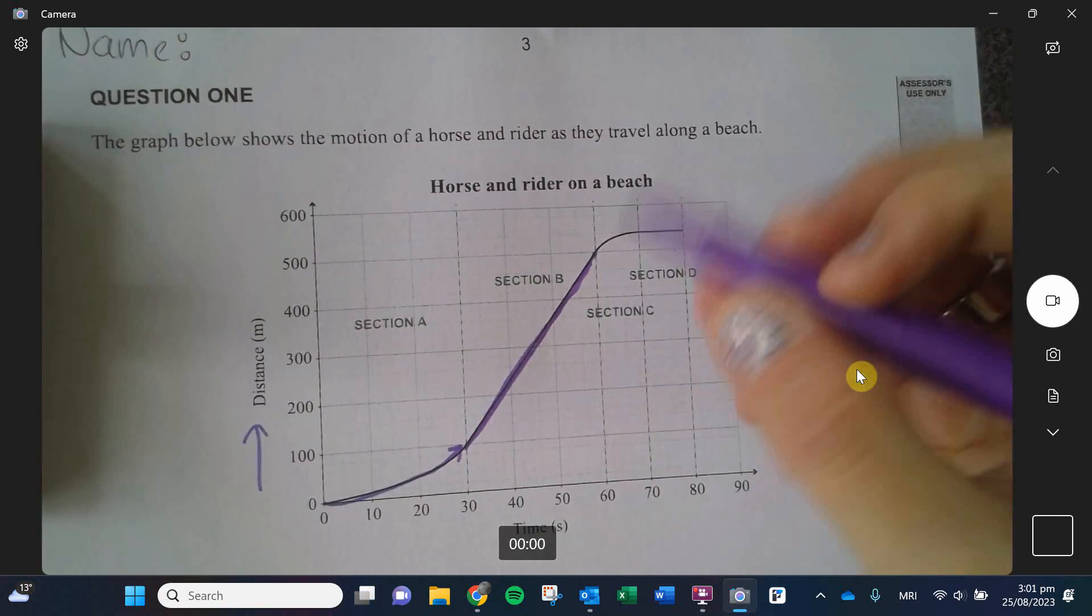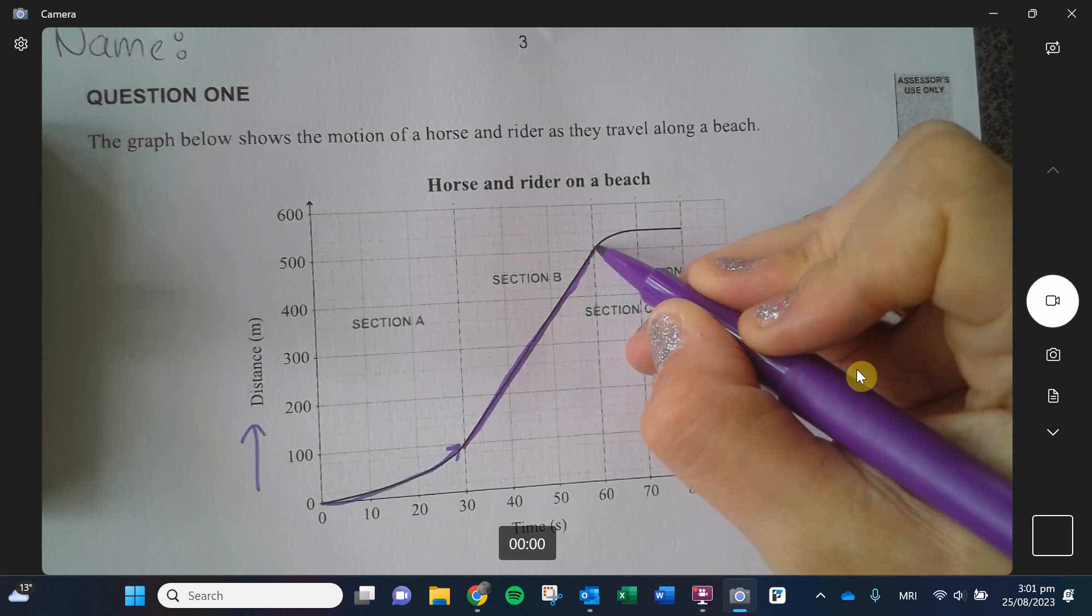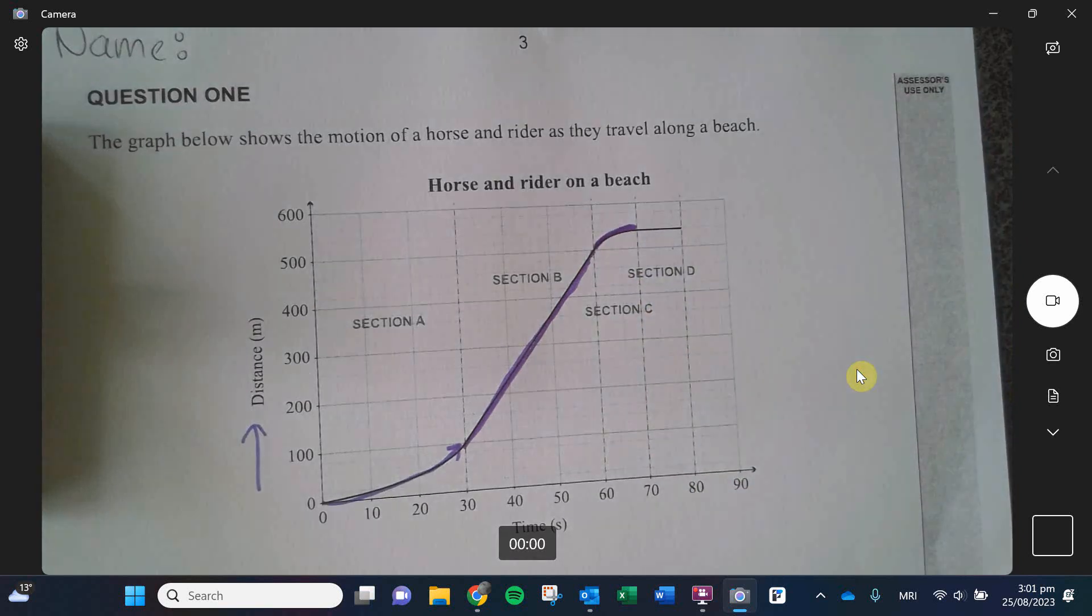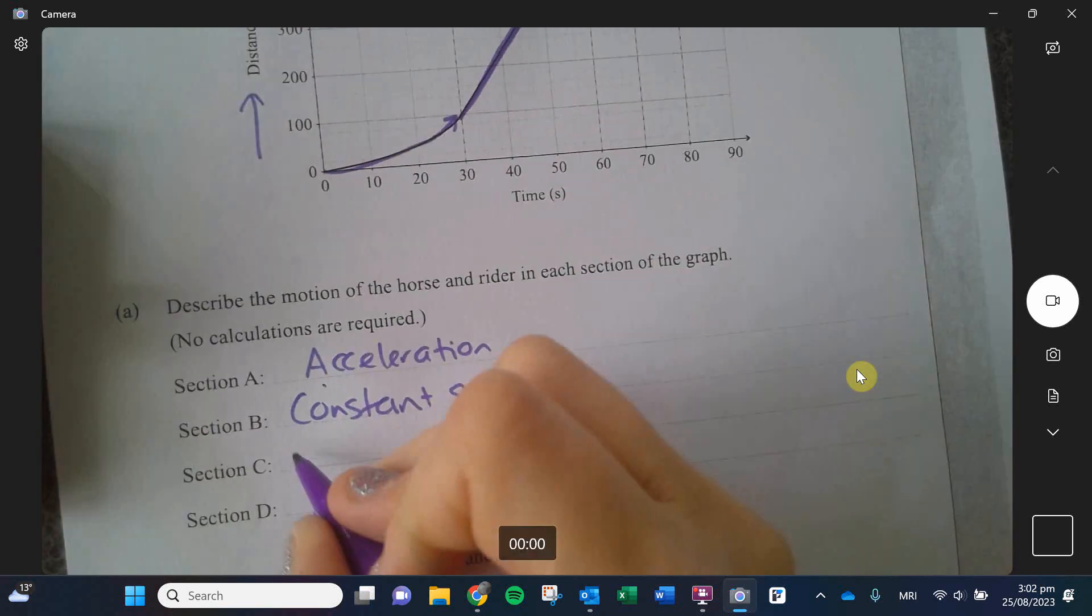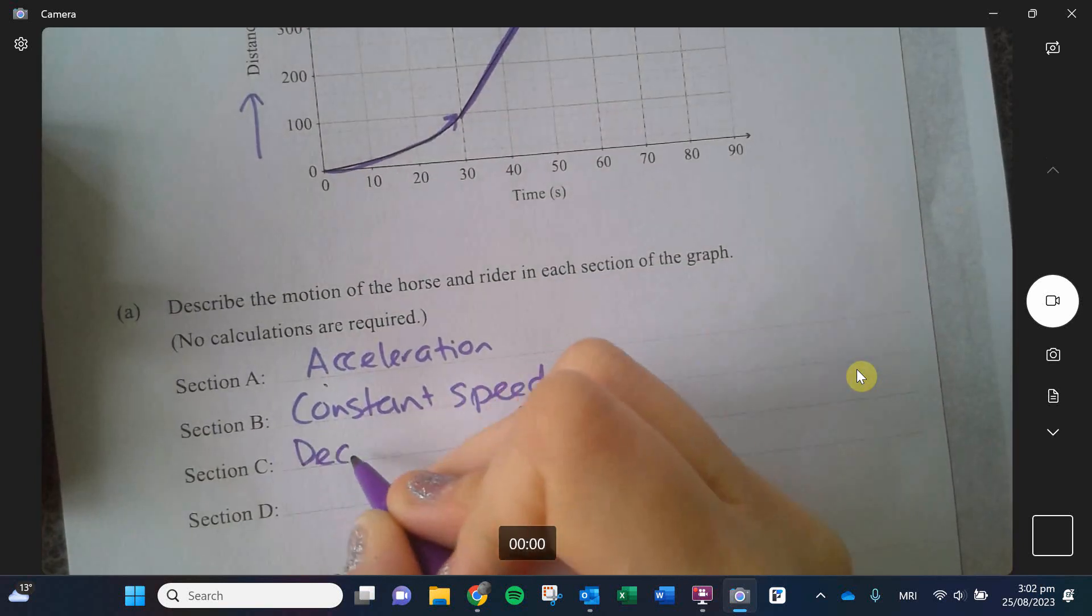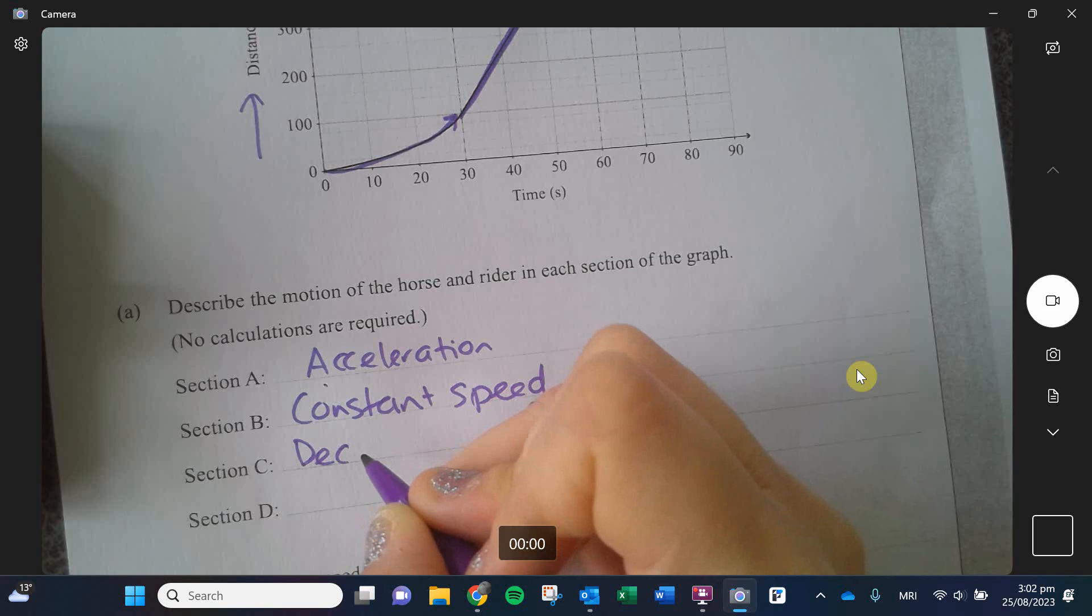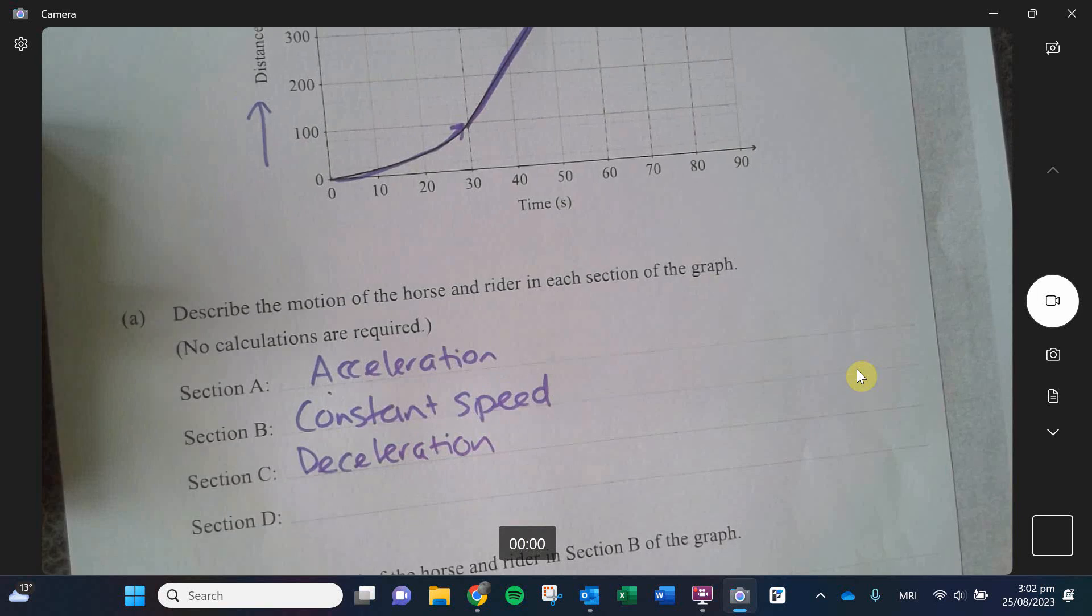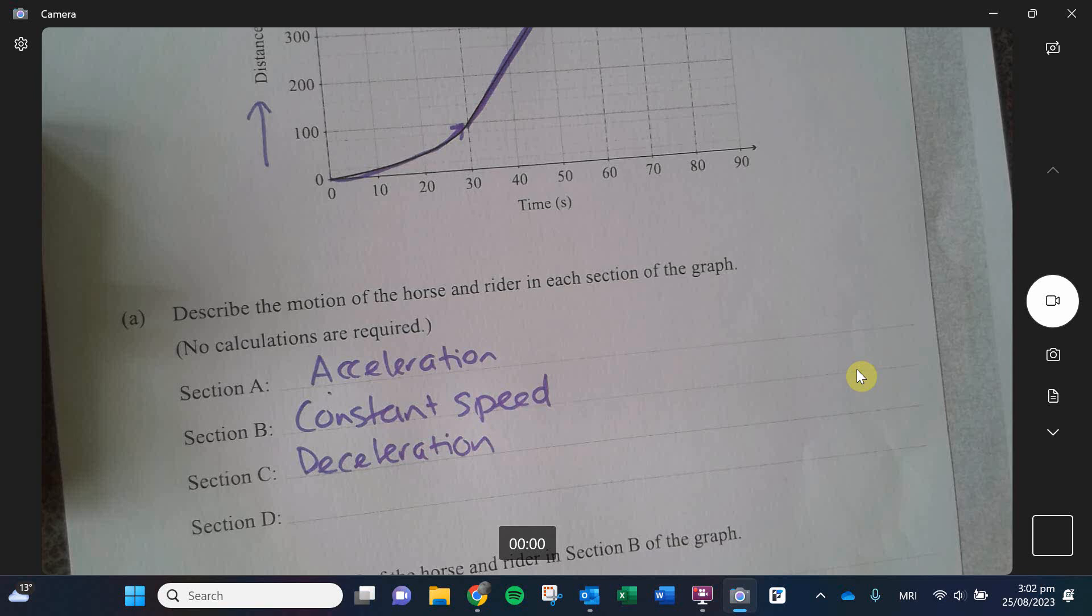In C, we notice that we actually have another curve, but this curve is going like sad face. So I'm covering less distance over my time. So this is deceleration. And then the last one, I see that I am staying at the same location. I'm not traveling any distance. So I am stationary. I am not moving.